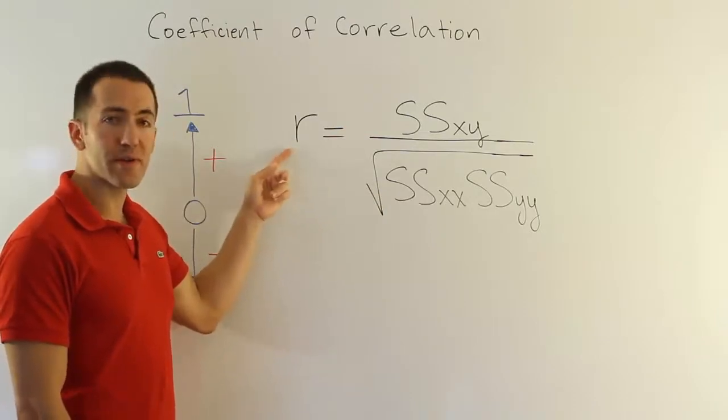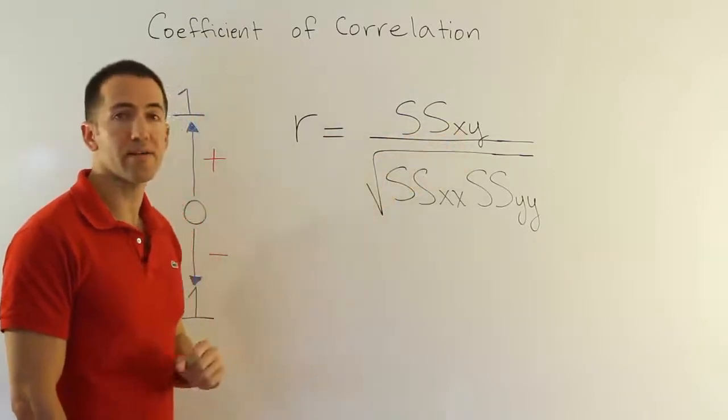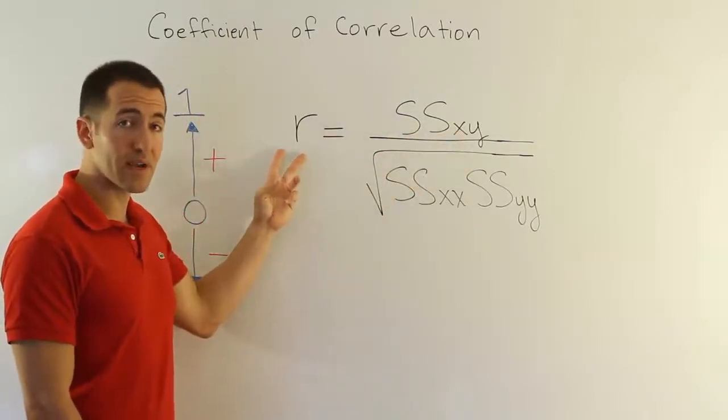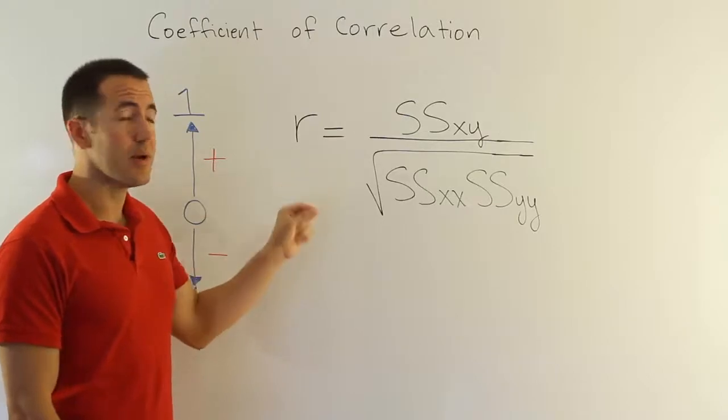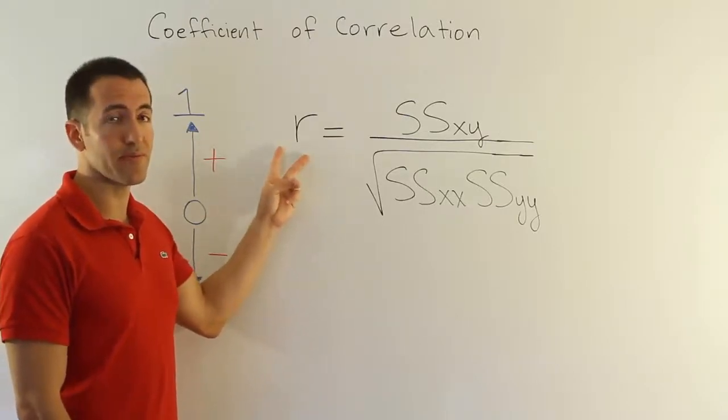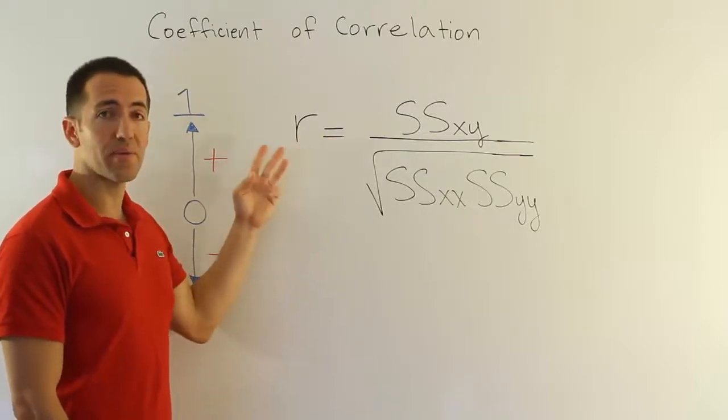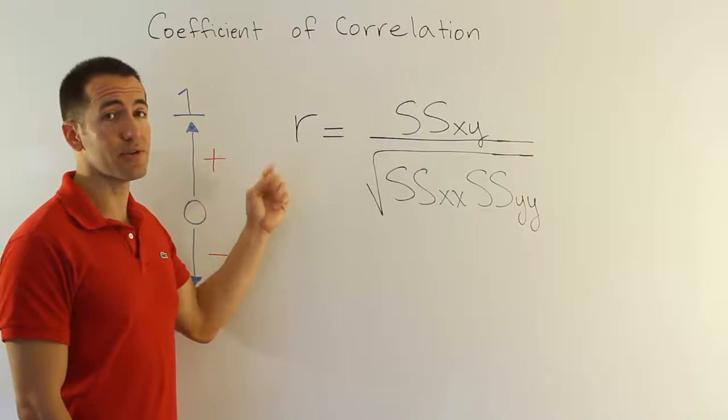r measures the strength of the linear relationship between the variables x and y. So the first thing we want to remember is it measures the strength of the linear relationship. We don't talk about other kinds of relationship, just the linear relationship. So x and y may be related in another way, r doesn't speak to that. It only measures the strength of the linear relationship between the two variables.